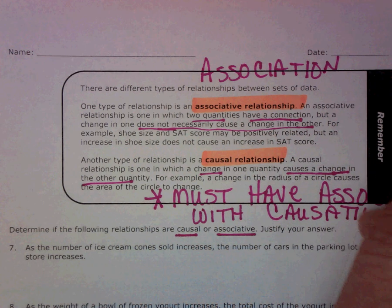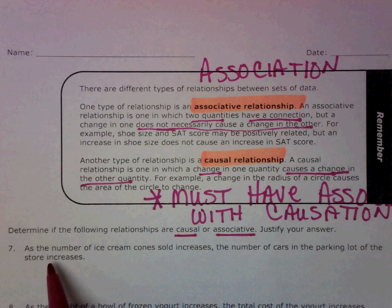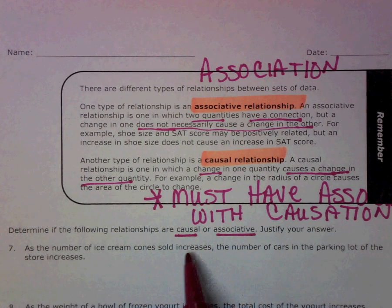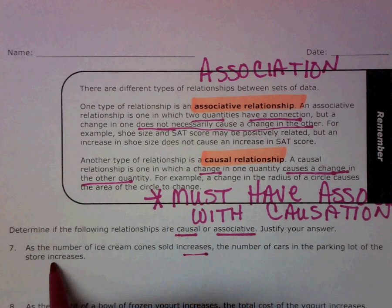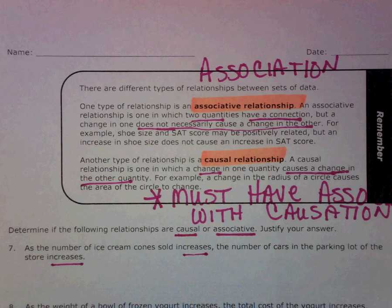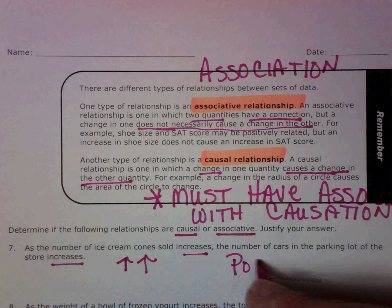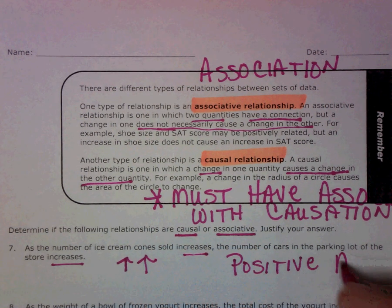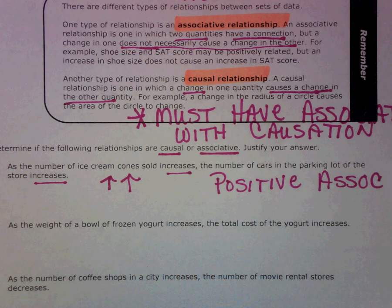So let's look at our example. First we want to decide: is there an association? As the number of ice cream cones sold increases, the number of cars in the parking lot of the store increases. You could say as one goes up, the other is going up, so that is a positive association. But does the sale of ice cream cones cause a lot of cars, or does a lot of cars cause ice cream cones to be sold? No. There is no causation with that.